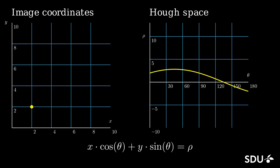It takes one image coordinate and maps it to a curve in Hough space, and by moving the point around in the image coordinates, the associated curve in Hough space is also modified.